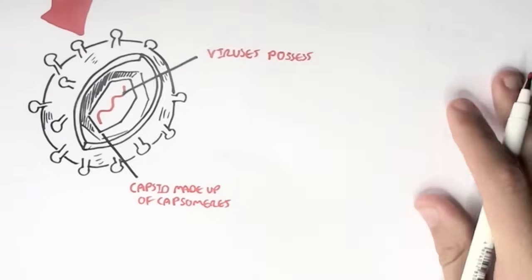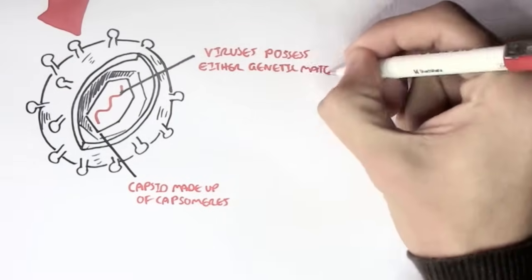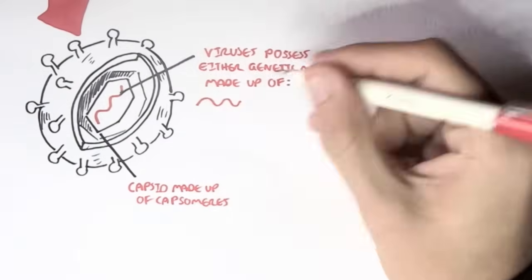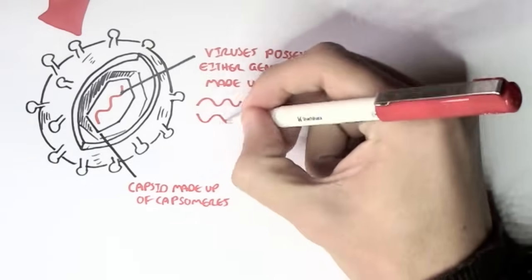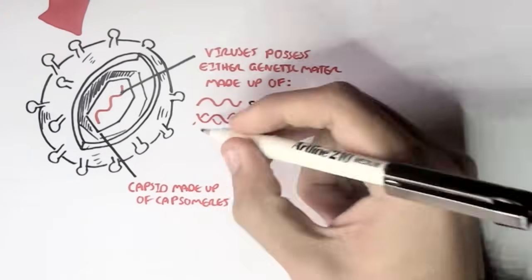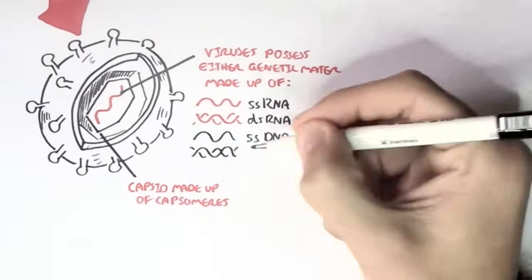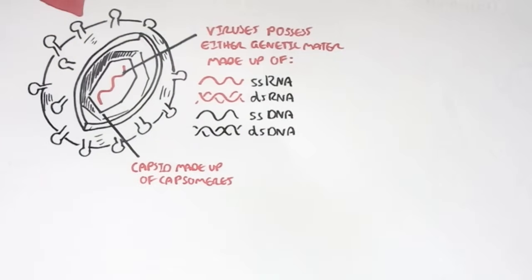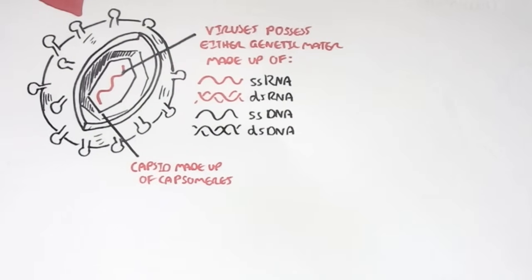Viruses possess either genetic material made up of single-stranded RNAs, double-stranded RNAs, single-stranded DNAs, or double-stranded DNAs. They can also have partial strands, such as in the hepatitis B virus, which is partial, double-stranded DNAs.